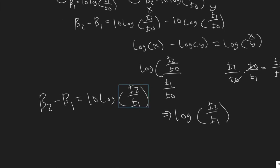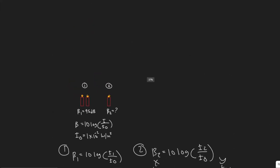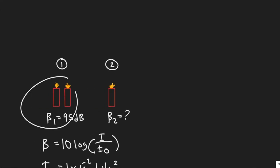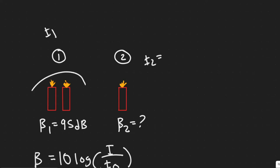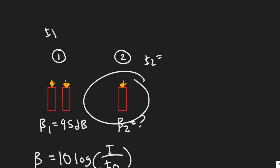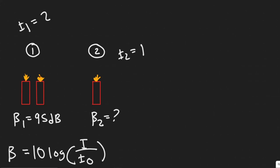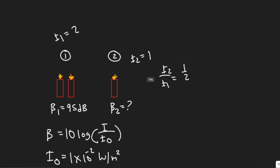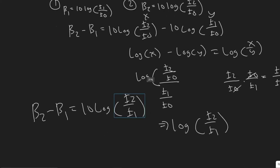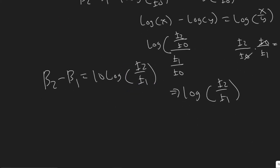The trick to this problem is knowing the ratio of I₂ to I₁. Scenario one has two firecrackers, scenario two has only one — so the intensity in scenario one is basically double that of scenario two. If I₂ is one, then I₁ would be two. So I₂ over I₁ is just one half — the intensity is half because we have half as many sources.